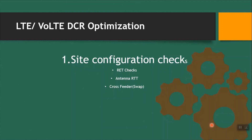Maybe I will cover other vendor parameters in some other video. Site configuration checks have been divided in three parts: first one is RET checks, second one is antenna RTT, and third one is cross feeder.